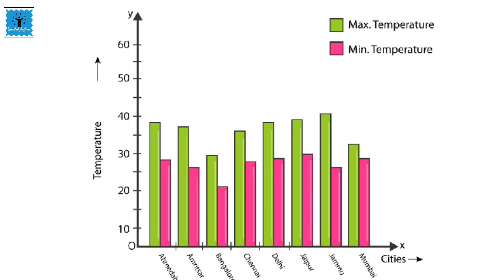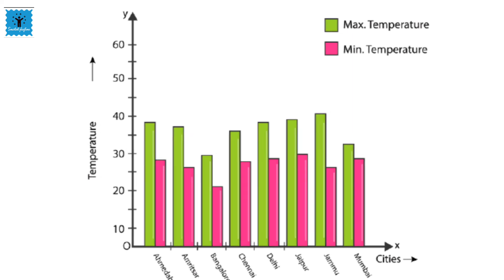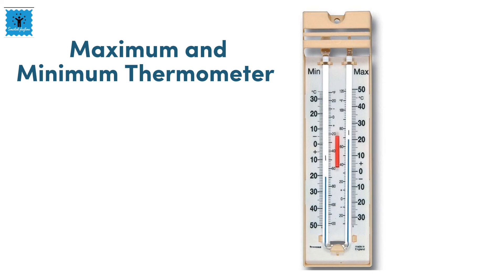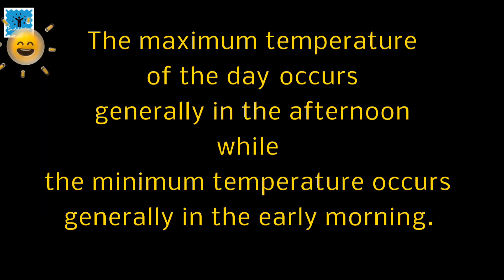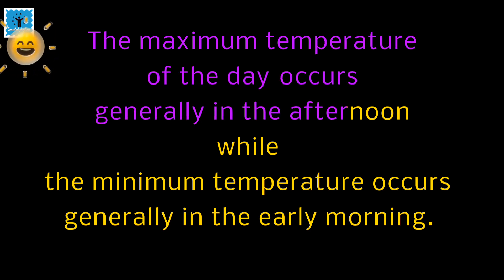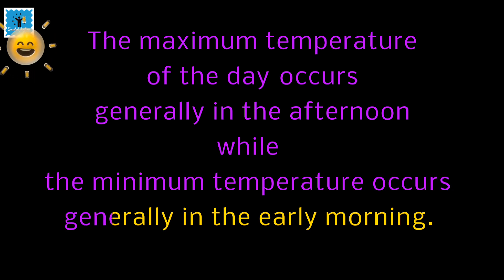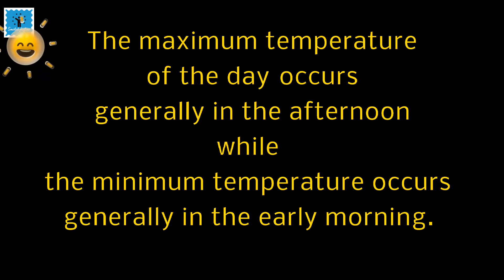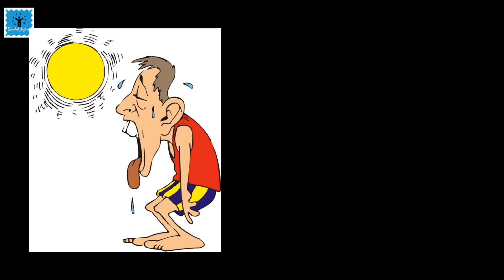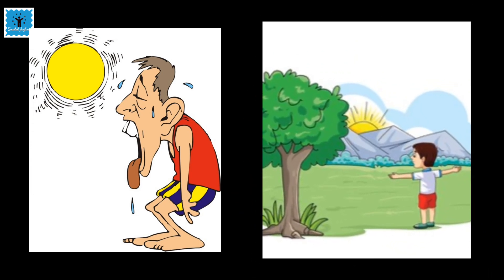From any weather report, maximum and minimum temperatures are recorded every day using a special thermometer called a maximum and minimum thermometer — a J-shaped glass tube filled with alcohol and mercury. The right tube gives the maximum temperature while the left tube gives the minimum temperature. The maximum temperature of the day occurs generally in the afternoon, while the minimum temperature occurs generally in the early morning — that's why during summer we feel so hot during the afternoon and comfortable in the early morning.